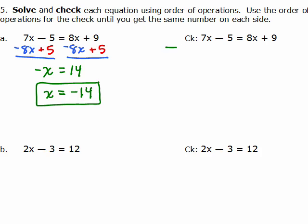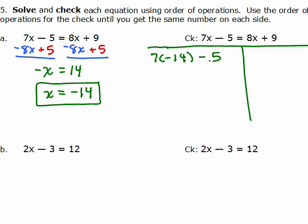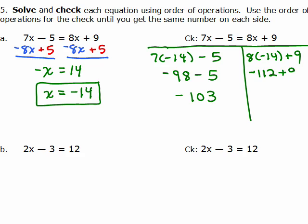Now let's check it. To check it, you're going to put negative 14 in for x. So we have 7 times negative 14 minus 5, and do the order of operations — 7 times negative 14 is negative 98 minus 5, or negative 103. On the right side, we also put in negative 14: 8 times negative 14 is negative 112 plus 9, and that's negative 103. Both sides of the equation are negative 103 when you replace x with negative 14, so that means this is the correct solution.